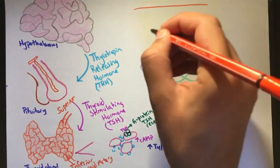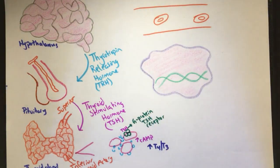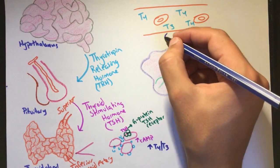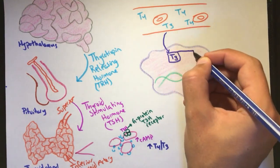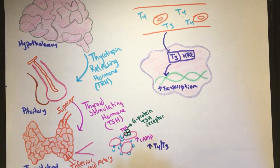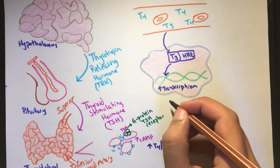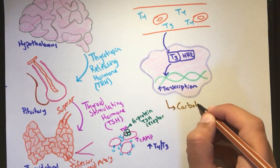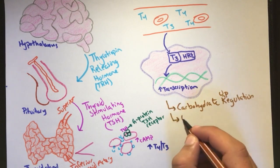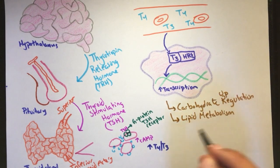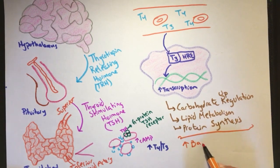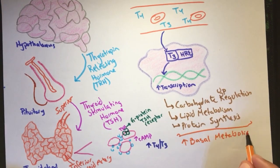T4 and T3 are released into the body circulation and bind to thyroid hormone receptors, which are nuclear receptors that result in the formation of a hormone response element. This hormone response element alters transcription. Thyroid hormones function in metabolism, causing upregulation of carbohydrate metabolism, lipid metabolism, and protein synthesis. The overall effect is an increase in basal metabolic rate, known as BMR.